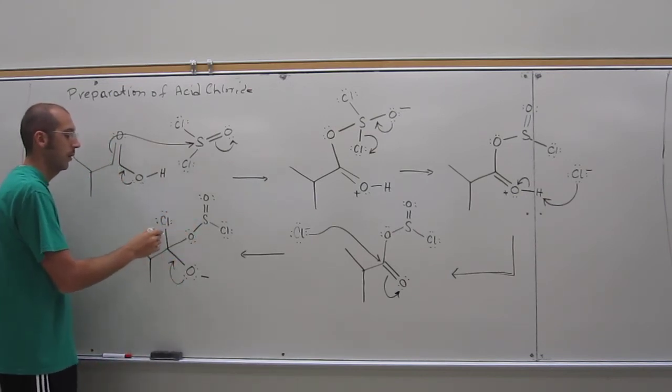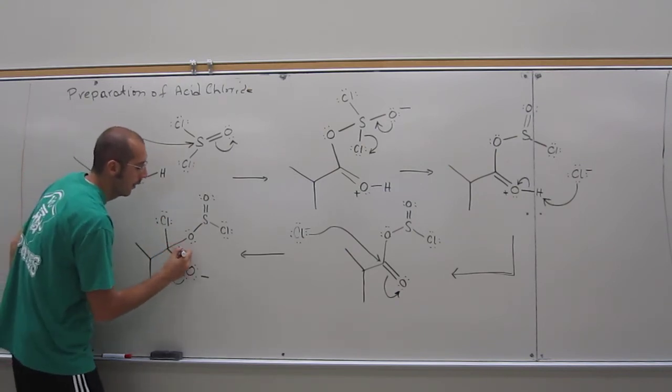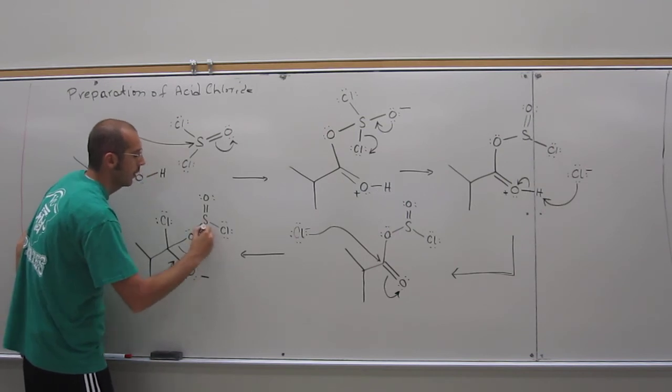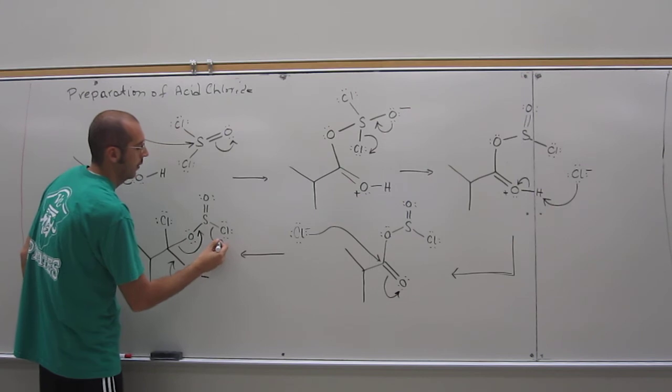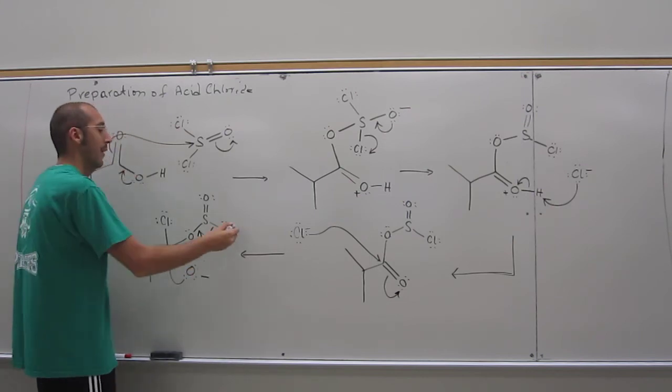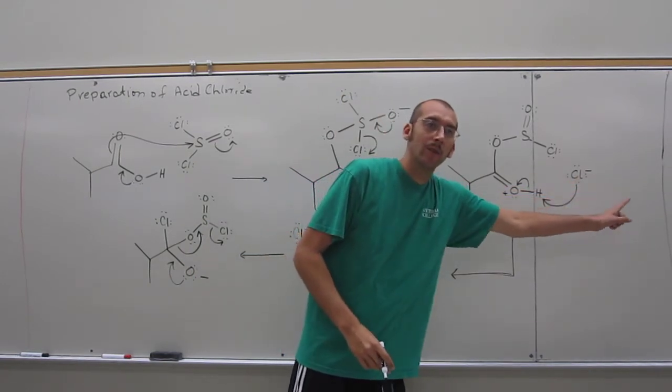Well, the chlorine we know is a good leaving group. But if we kick this guy off, it makes a stable molecule there, SO2, and then that will kick that chlorine out. And that chlorine can go back and be the base for the next one.